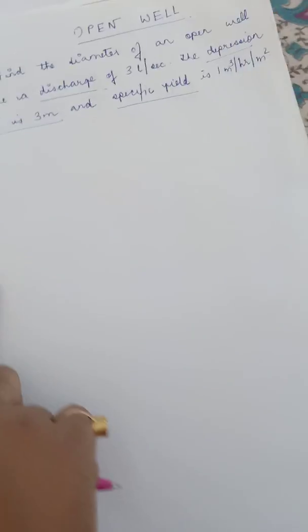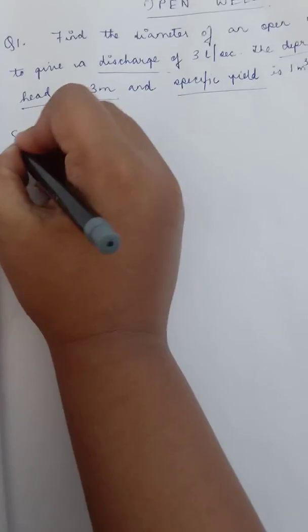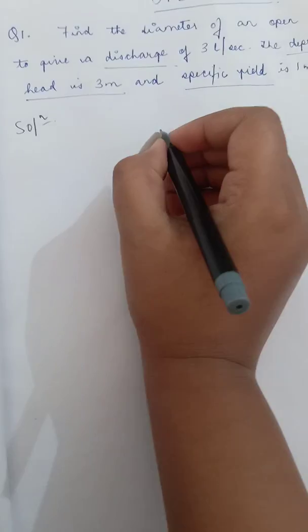Now, what is specific yield? As given in the lecture notes, specific yield is defined as the ratio of the volume of water that can be drained off by gravity to the total volume of soil after attaining the point of saturation. This is a term related to sources of water. So let us solve the sum.